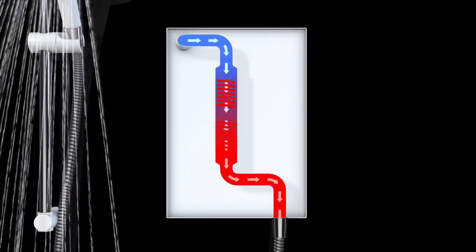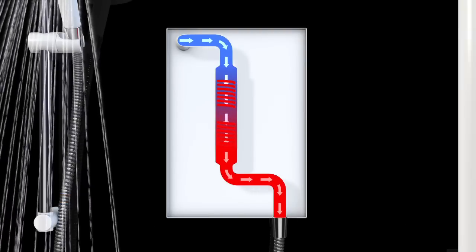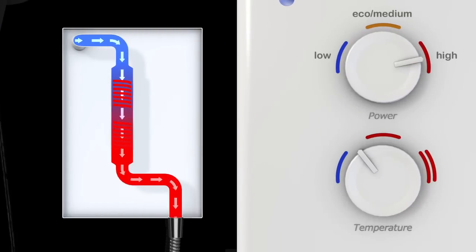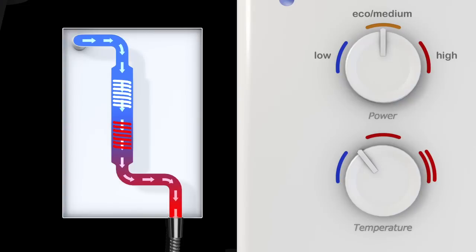However, most electric showers can't increase the flow enough, so the user also needs to turn the power control down to medium or eco. This turns off one of the heating elements and reduces the showering temperature, but the force of the shower is also reduced, making it difficult to have a cool and powerful shower in the summer just when you need it most.